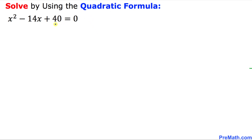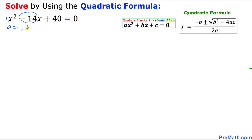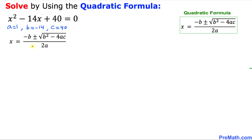Here is the quadratic formula that we will be using to solve this quadratic equation. Now we need to find out the values of a, b, and c. We are going to compare this given quadratic equation with our standard form, and if we compare these two equations we can see that our a value is 1, b is negative 14, and c is positive 40.